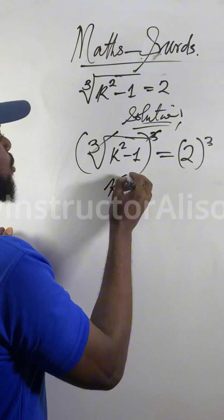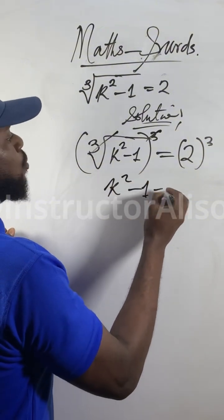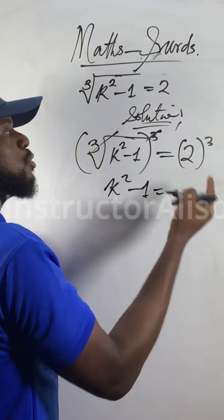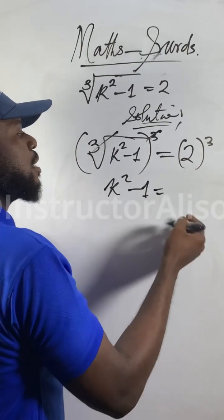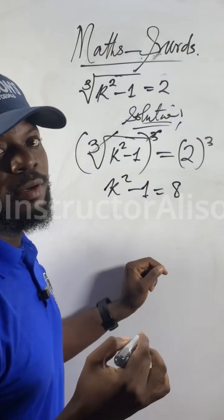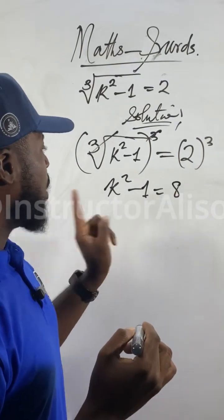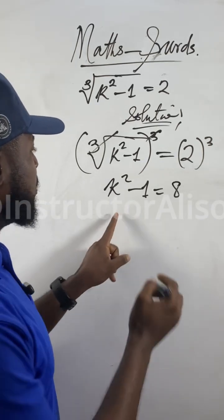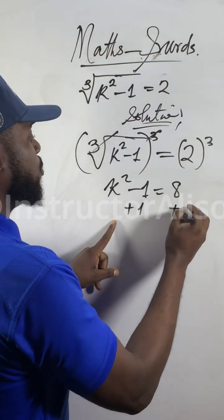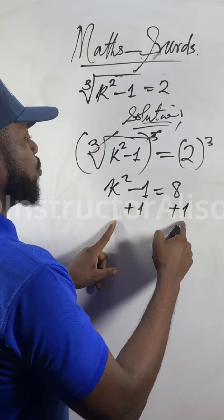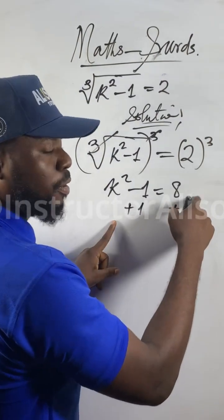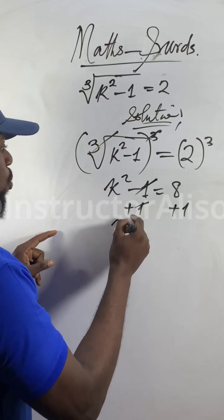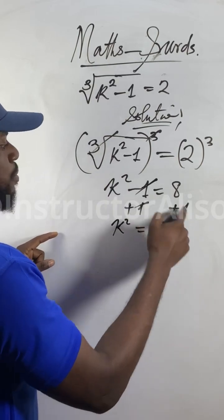So now: k squared minus one equals two cubed, meaning two times two times two. Two times two is four, times two is eight. Now to find k, add one to both sides — carry the minus one across, making it plus one — so this one cancels.